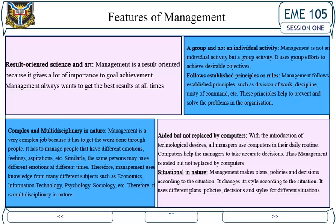Management is result-oriented because it gives a lot of importance to goal achievement — management always wants to get the best results at all times. Management is also complex and multidisciplinary in nature. It is a very complex job because it has to get work done through people with different emotions, feelings, and aspirations, and the same person may have different emotions at different times. Therefore, management uses knowledge from many different subjects such as economics, information technology, psychology, and sociology — making it multidisciplinary in nature.